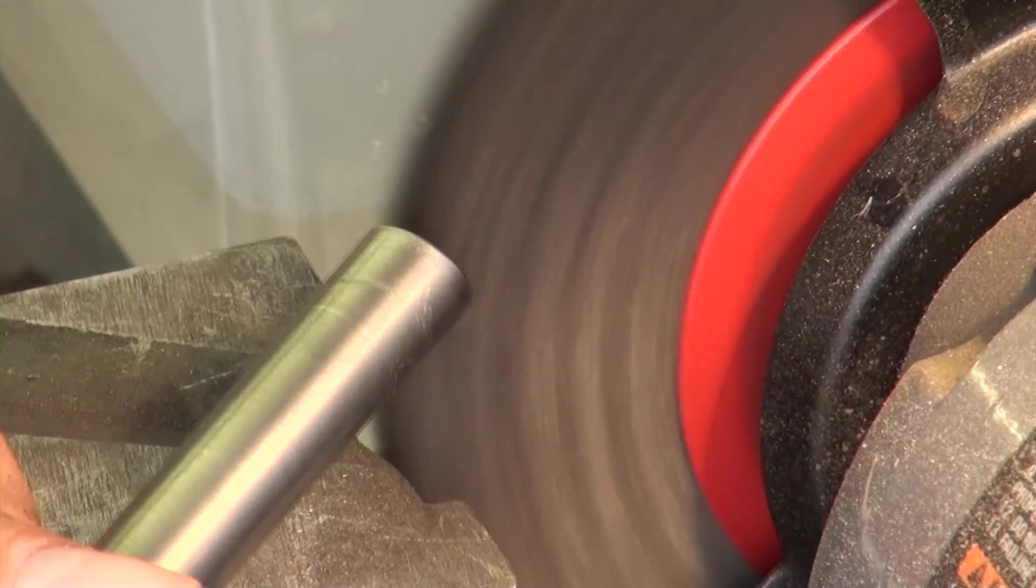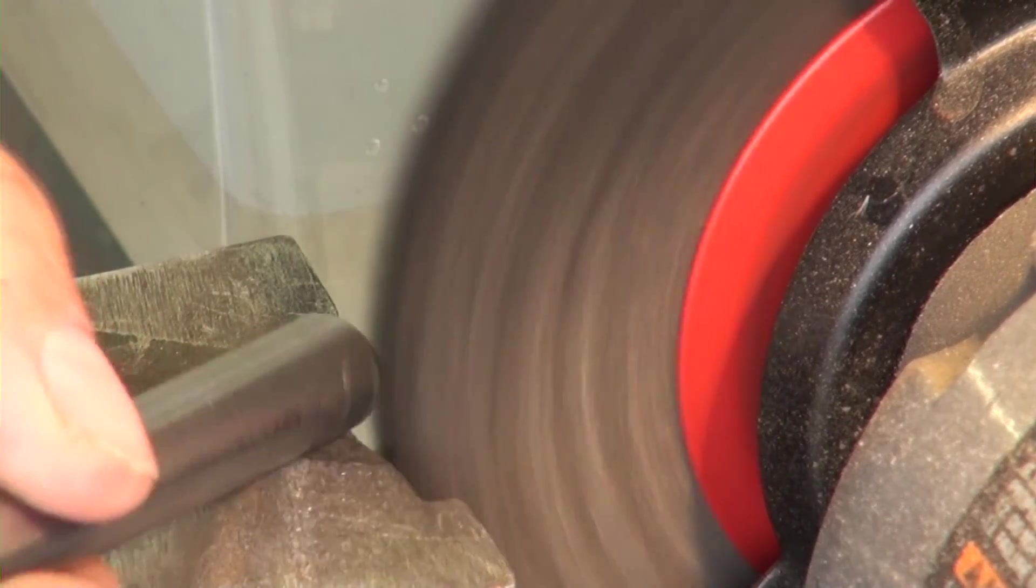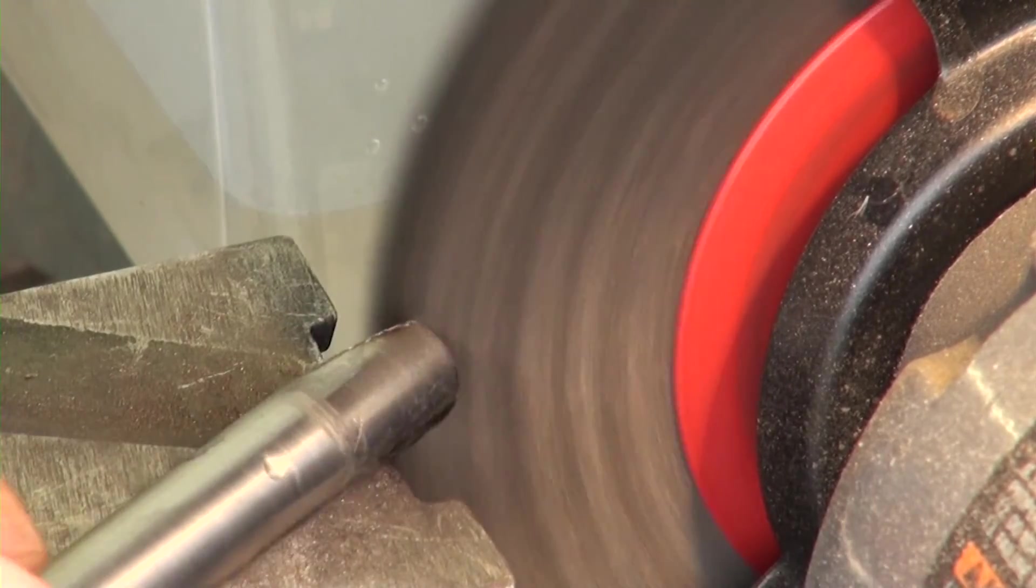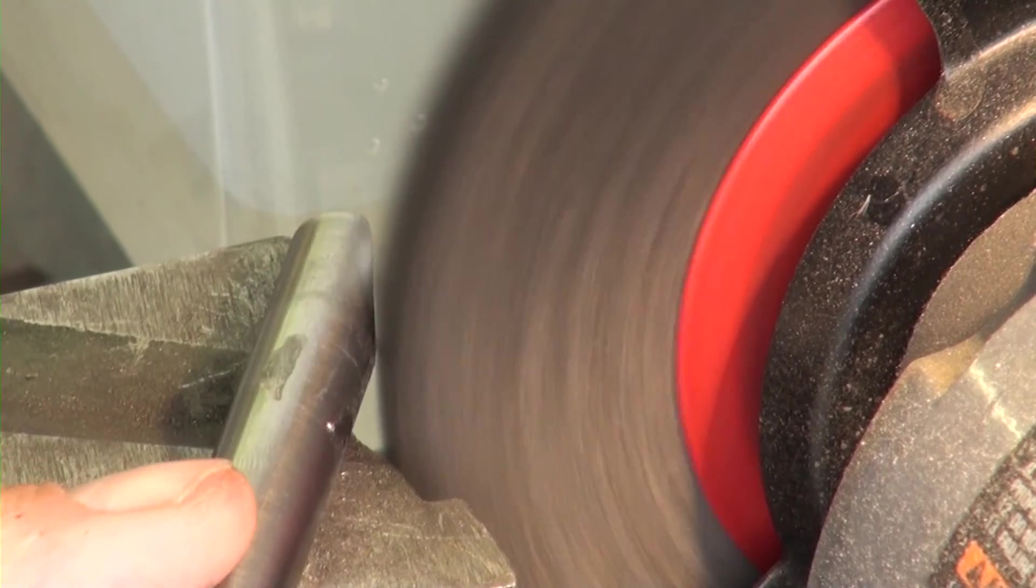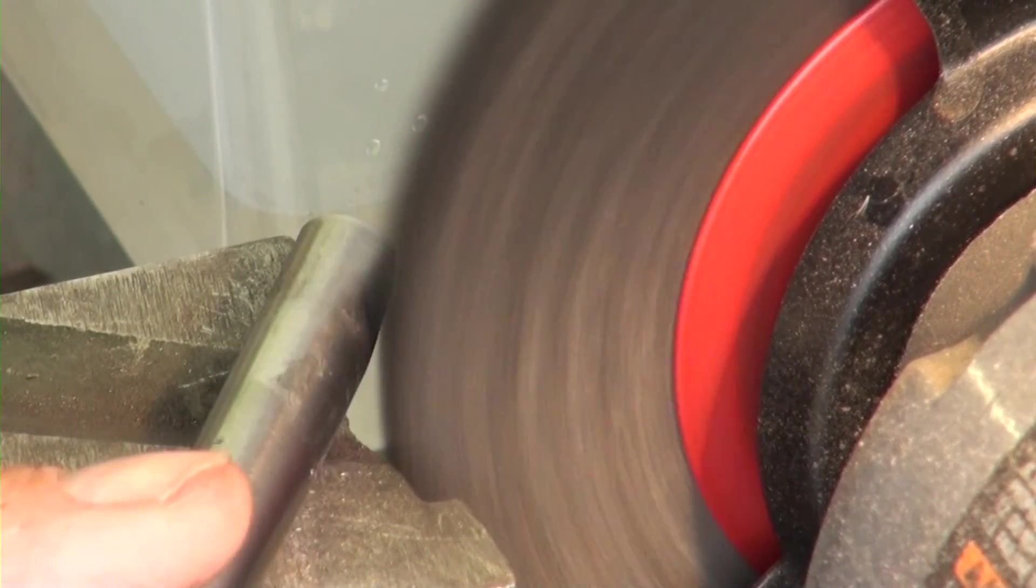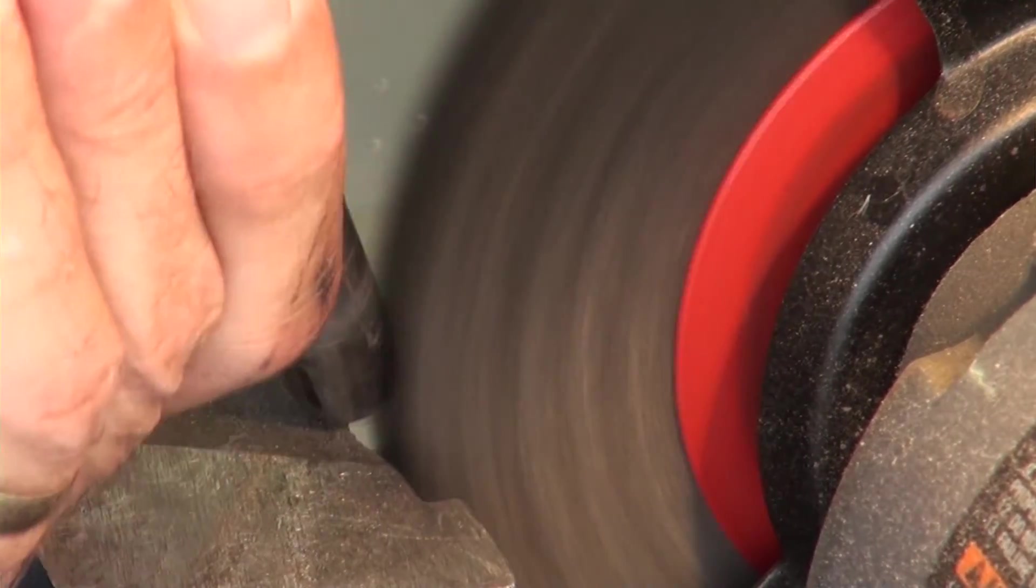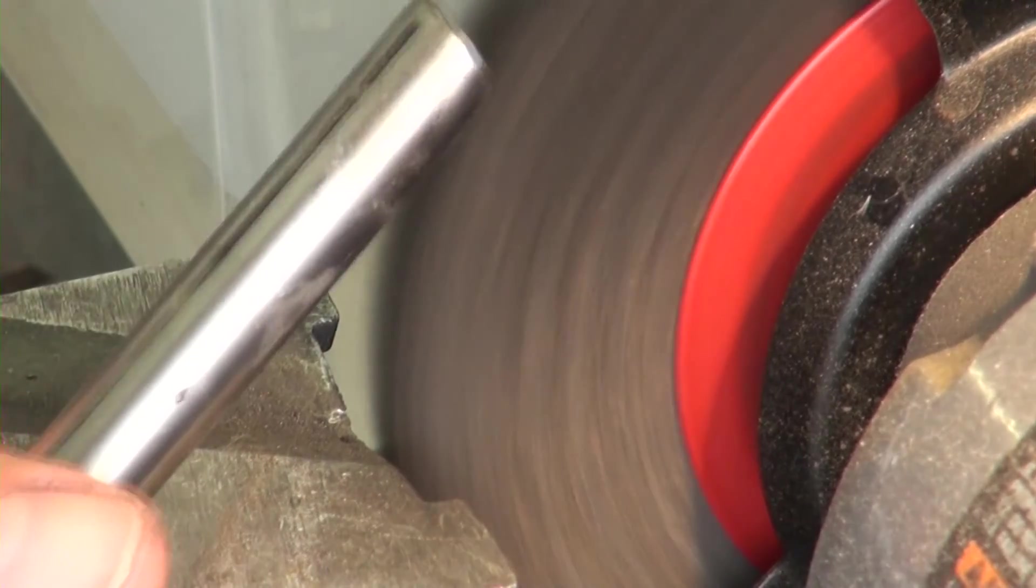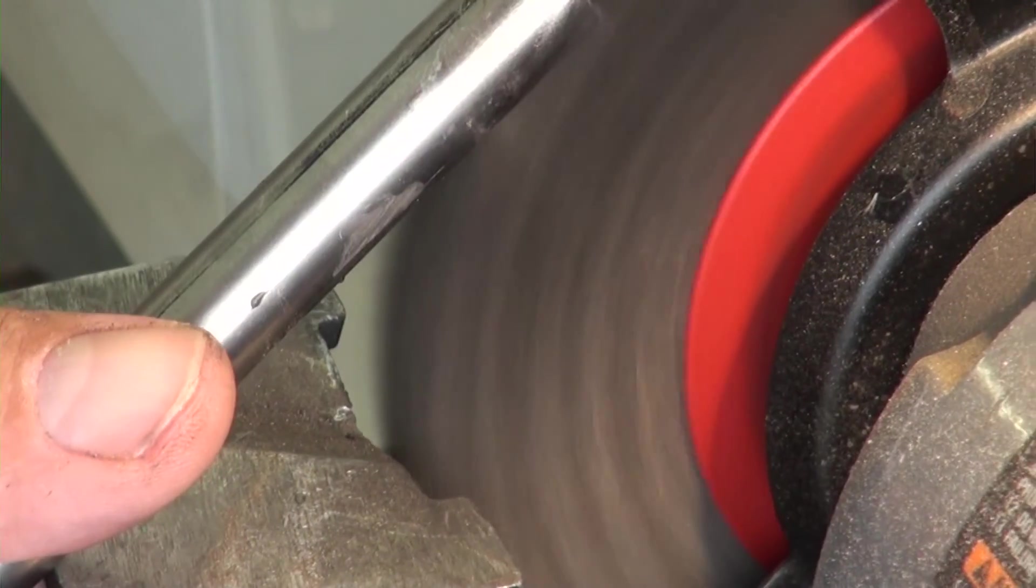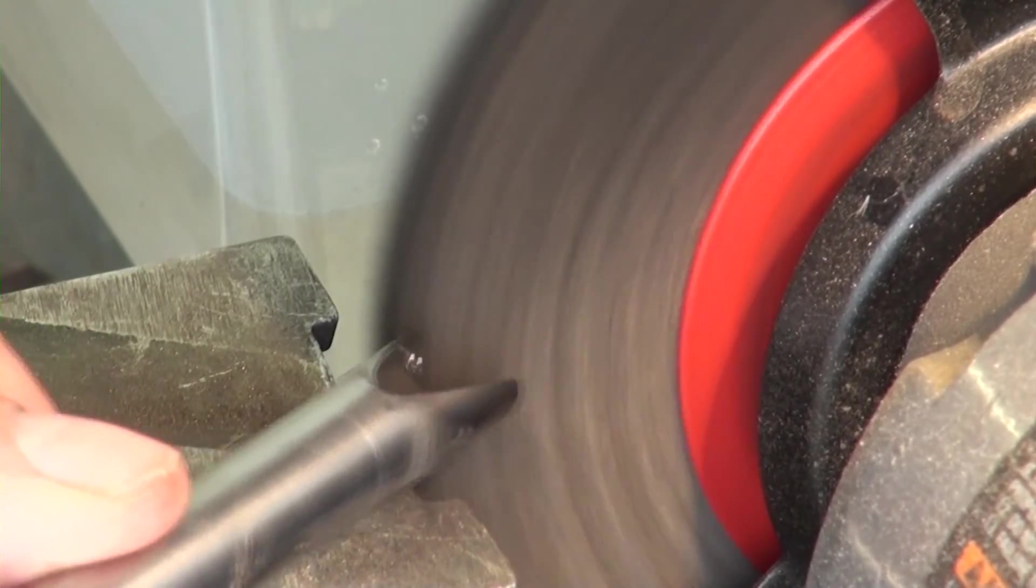The last step is to simply deburr the ends of the tube where we've had all the grinding marks. The wire wheel on the other end of the grinder is a really effective tool for taking care of this little problem. It's going to leave us with a tube that's clean and ready to weld, making for a very simple process. So we've shown you from start to finish, the process that's used on every one of the tubes in the entire fuselage frame. And once you get this dialed in, you'll find that this goes really quickly.